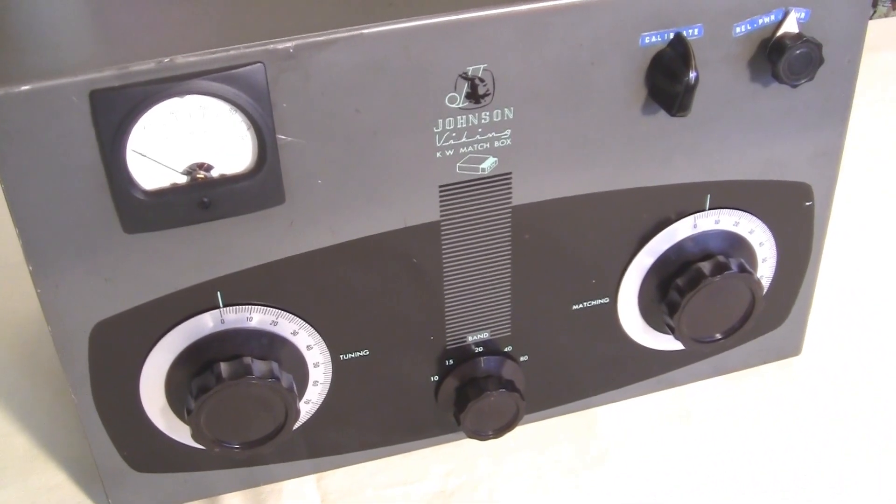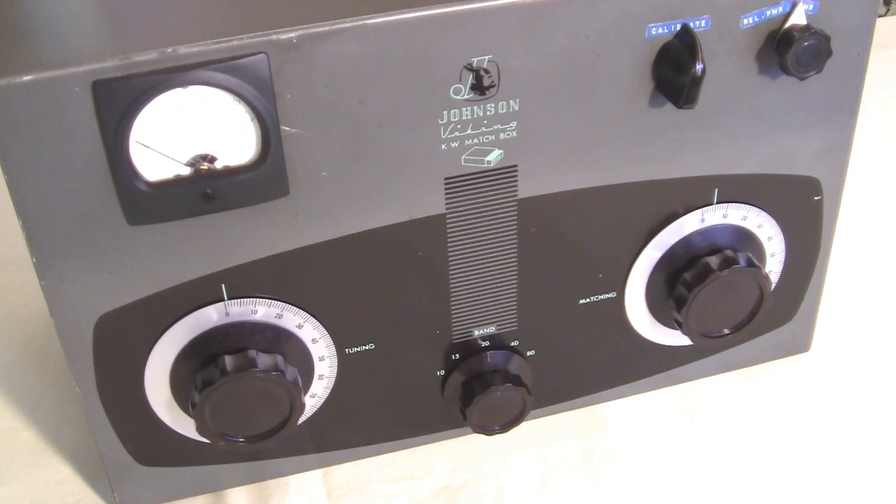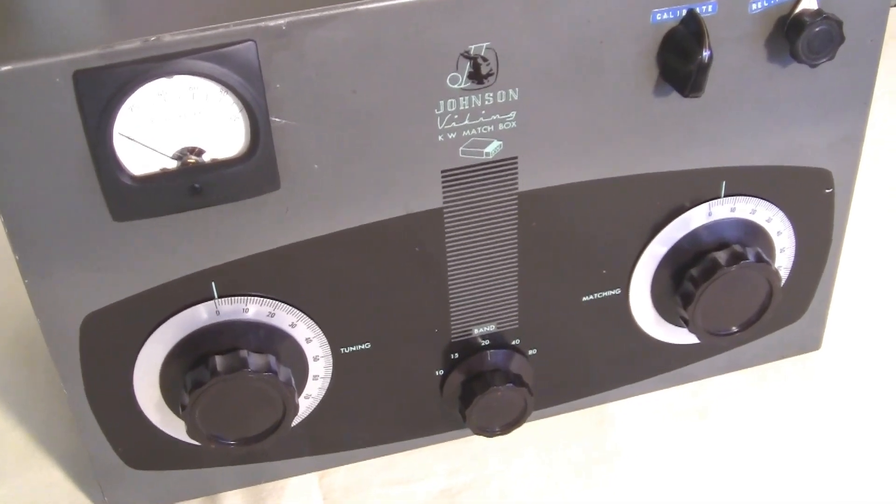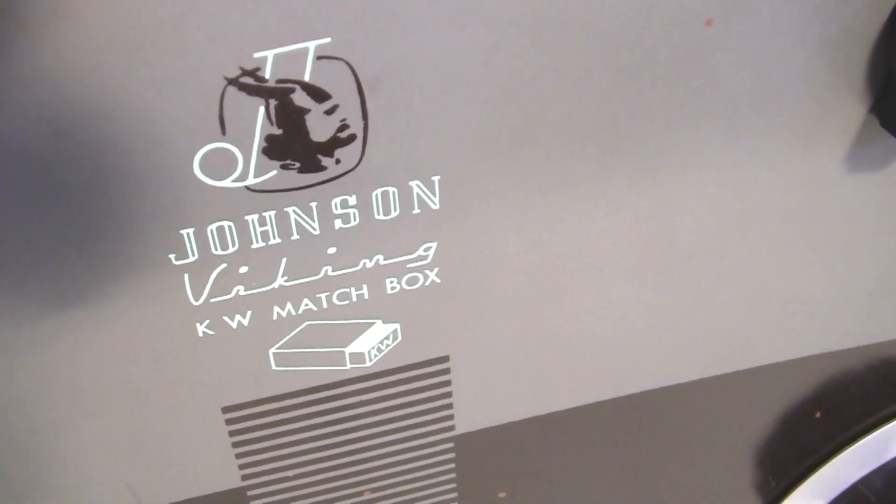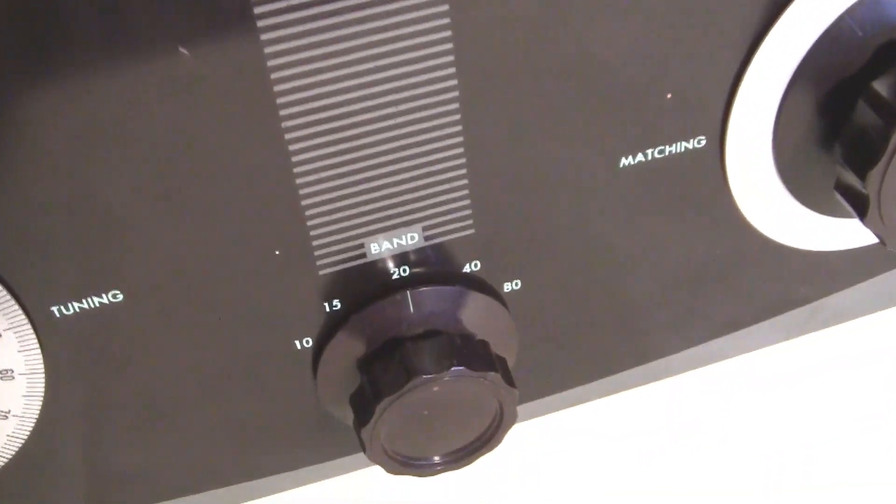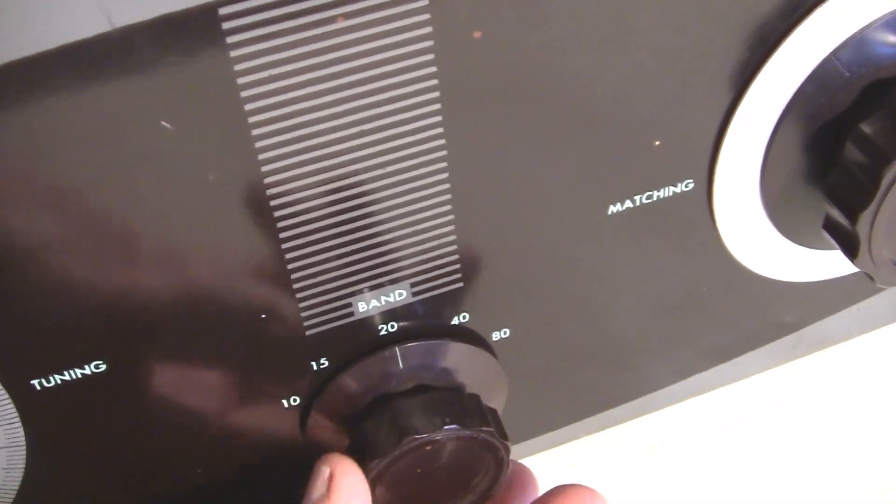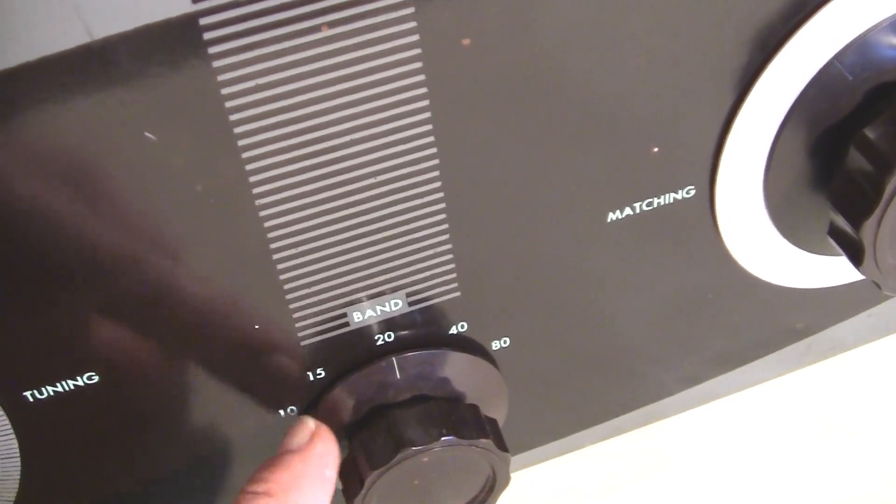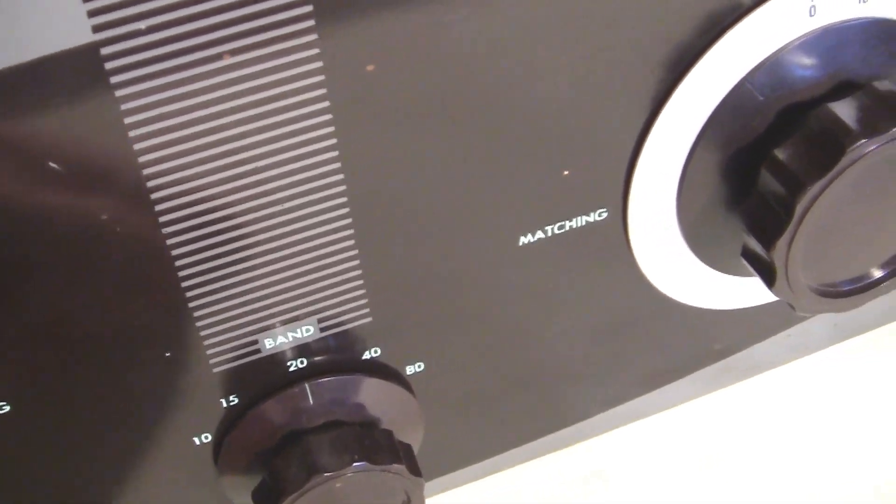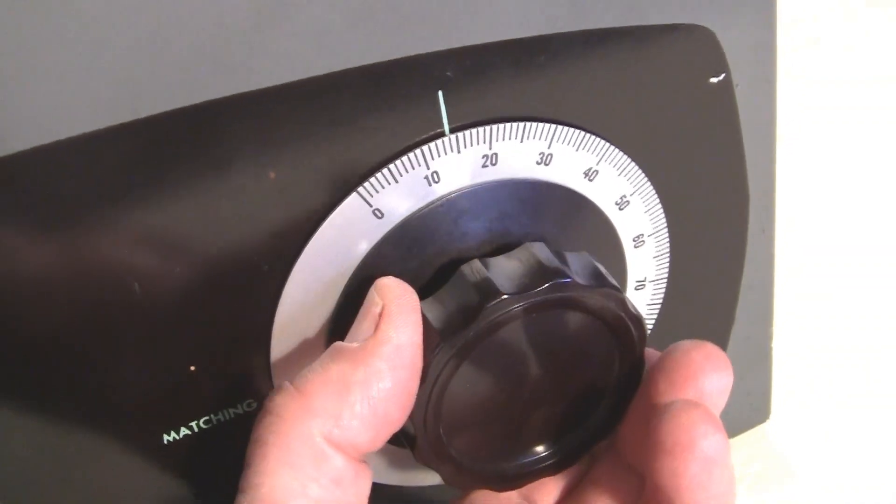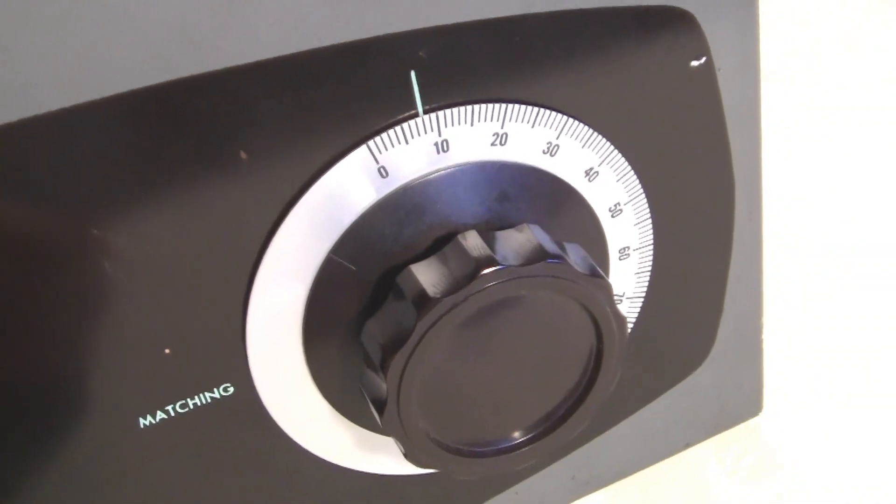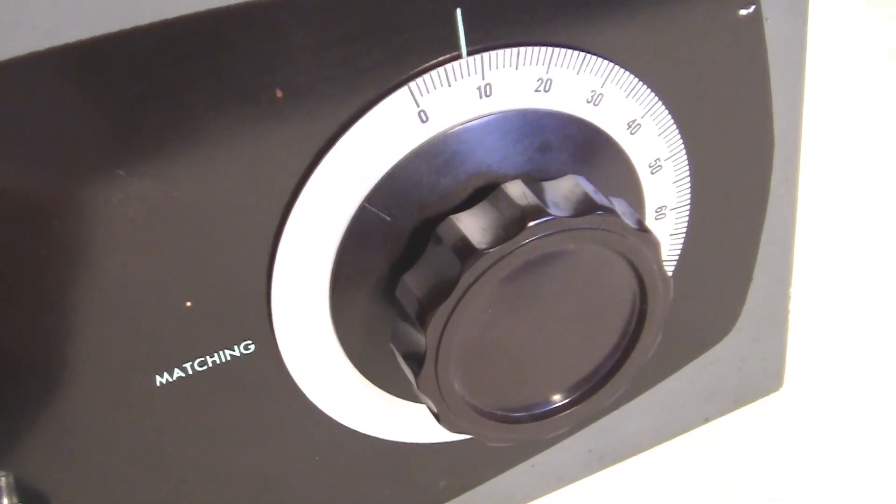Here's the front panel of the Johnson Viking Kilowatt Matchbox Tuner. Here we see the nice Johnson logo, Kilowatt Matchbox. Down here is the band switch for switching between 10 and 80 meters.